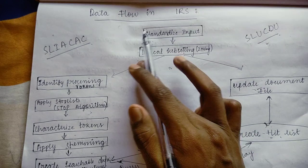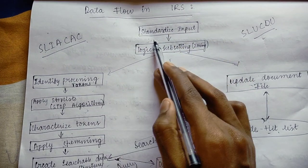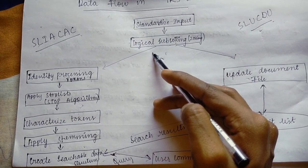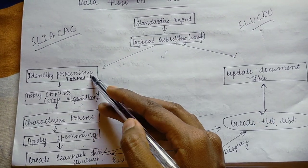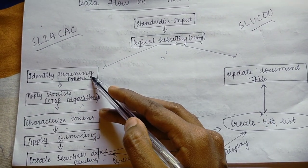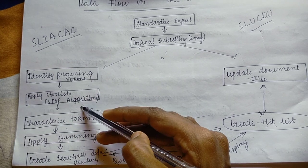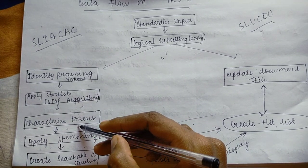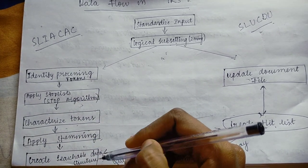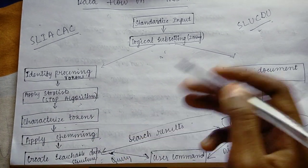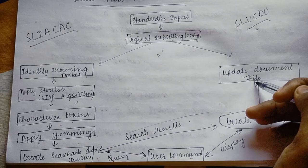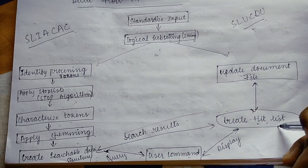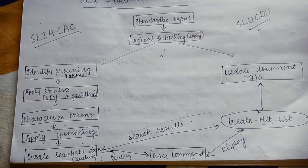To remember the data flow in IRS, you can use the short forms: SLIACAC and SLUDU. The full steps are: Standardized Input, Logical Subsetting (Zoning), Identify Processing Tokens, Apply Stop List, Characterize Tokens, Apply Stemming, Create Searchable Data Structure — and also: Update Document File, Create Hit List, Display to User.